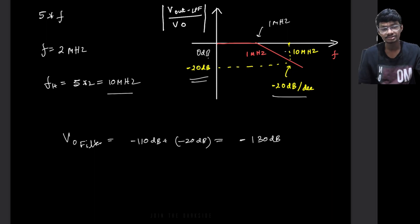is equal to minus 110 dBs plus minus 20 dBs. So the answer will be minus 130 dB. So this will basically be the output of the filter. This is the amount of quantity of harmonic that we will receive at the output of the filter. Thank you for watching and please hit the like button if this video helped.